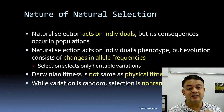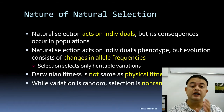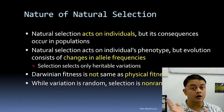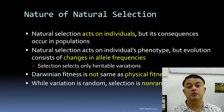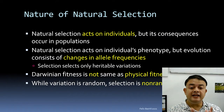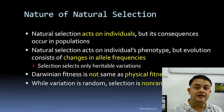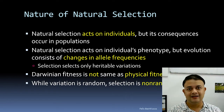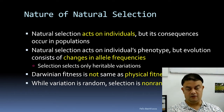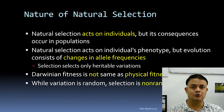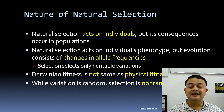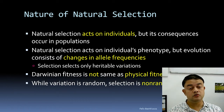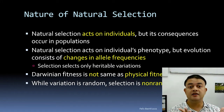Selection acts only on heritable variations — only some variants are heritable. Darwinian fitness is not the same as physical fitness. A muscular person may not be fit in Darwinian terms. Darwinian fitness has nothing to do with physical appearance — it could be a slender person, like a cyclist.